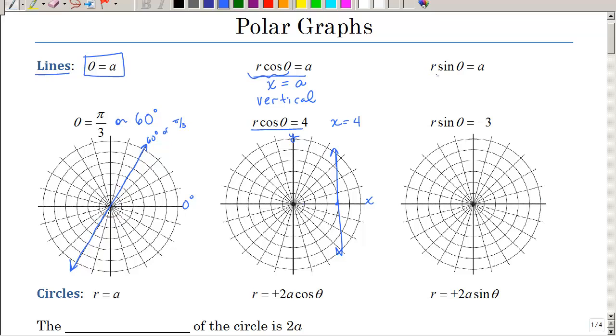So here we have r sine theta equals a, and again that relationship is y, and you should remember that this is always a horizontal line. So here we have y equals negative 3, and again if you want to think about that as x and y, we would come down here on the y axis, 1, 2, negative 3, and you would have your horizontal line.